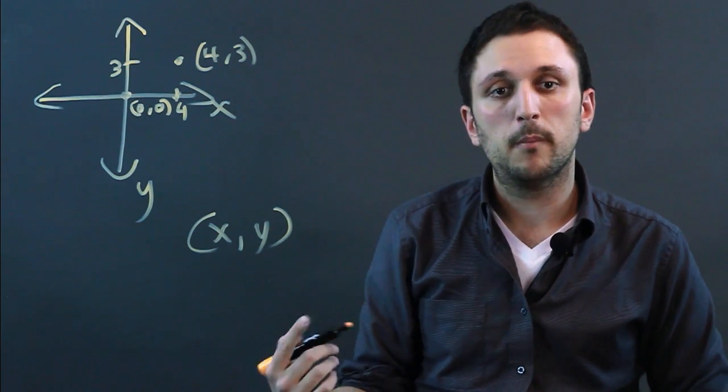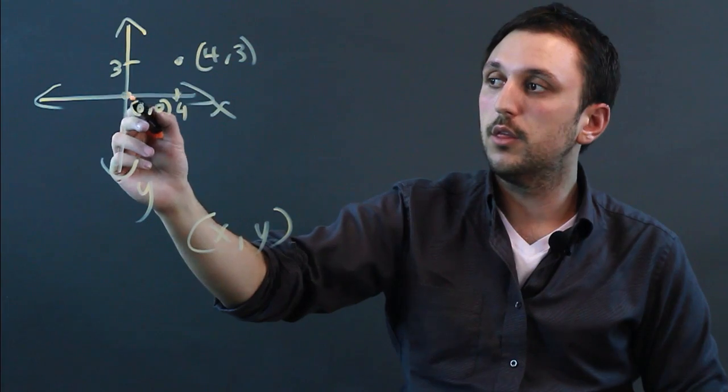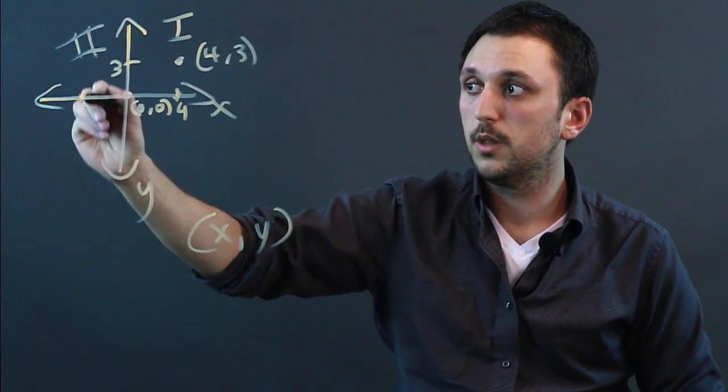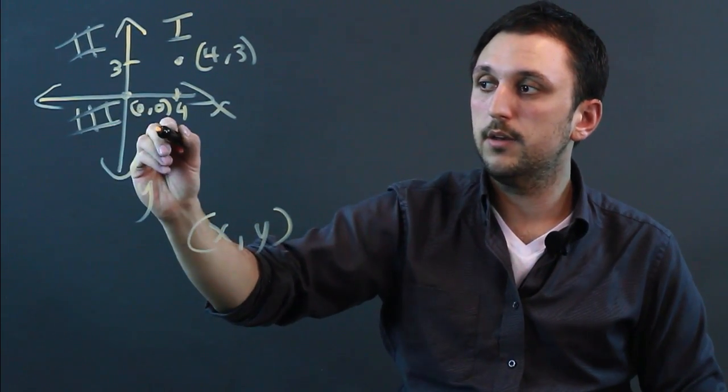Now the other thing to remember with a two-dimensional graph is the quadrants. There are four quadrants. This is called quadrant 1, 2, 3, and 4.